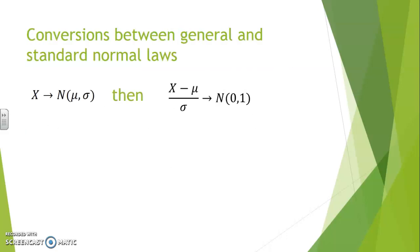Now, in the past, conversions between general and standard normal laws were quite useful because there were no tables for every single mu and sigma. That transformation required that we take variable X, subtract mu, and divide by sigma, which made it a standard normal law.